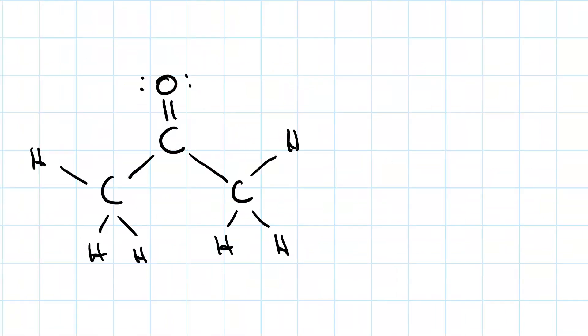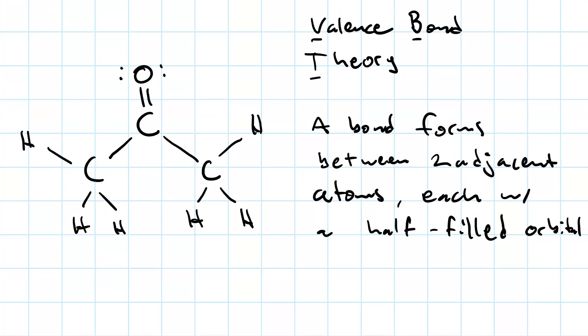Now let's use valence bond theory to examine the electronic structure at each of these atoms. One idea of valence bond theory is that a bond forms between two adjacent atoms when they each have a half-filled orbital that can overlap.